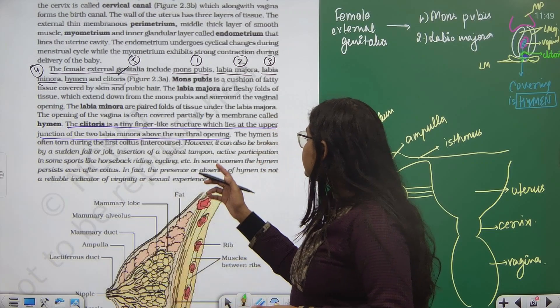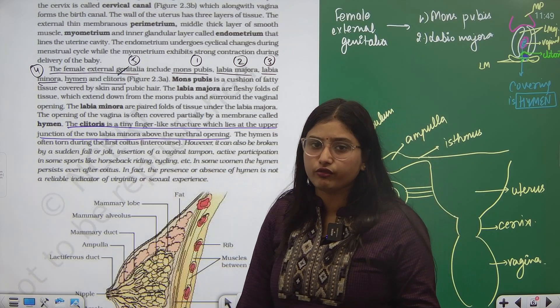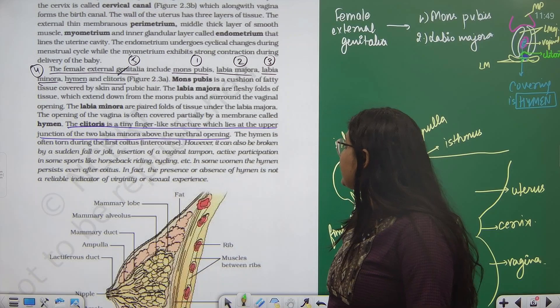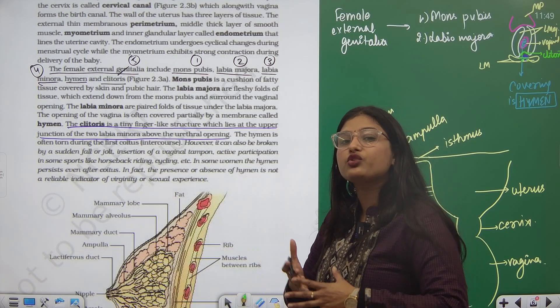It can break by insertion of any vaginal tampon that is used in case of menstruation, or active participation in some sports like horseback riding or cycling where you have stretching of your legs.